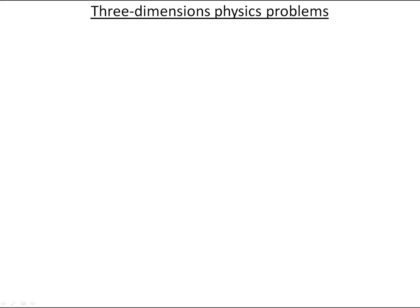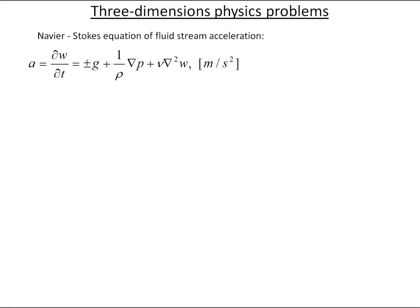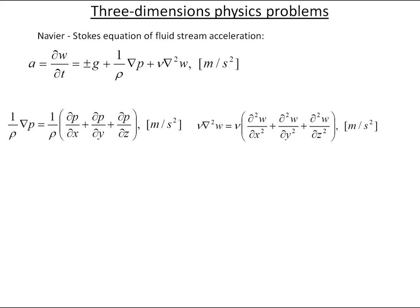Here we have a Navier-Stokes differential equation of fluid stream acceleration. Upside-down delta-griculator is called Laplace operator, and for velocity gradient it is a three-dimensional problem. Same for pressure gradient. We do not study the Navier-Stokes equation in detail, but we see that velocity gradient of a fluid flow and pressure gradient of fluid flow is a multivariable physics problem.